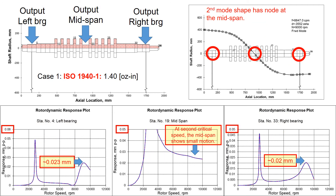Now let's look into the responses at the second critical speed. As you can see at the middle of the rotor, there is a very small movement at the second critical speed around 9000 rpm. This is because the rotor mid-span is the node at the second critical speed. Also, the second peak at the bearing locations is also smaller than the first peak. This is because, as shown in the damping ratio map from the previous slide, the bearing support provides a higher damping ratio at the second critical speed, reducing the amplitude motion.